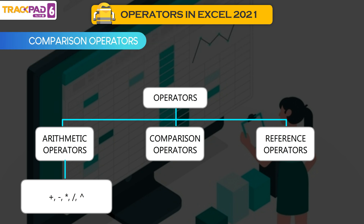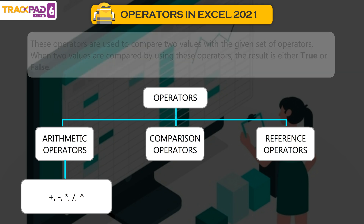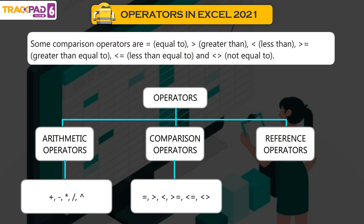Comparison Operators are used to compare two values with a given set of operators. When two values are compared by using these operators, the result is either true or false.